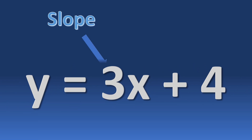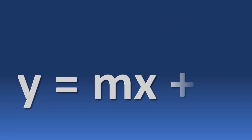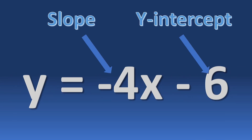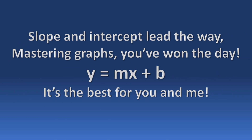y equals mx plus b. Start with b, it's on the y — plot it first, stop wasting time. Use your slope: rise up or down, run up to the right, your line is found. Slope and intercept lead the way — mastering graphs, you've won the day.